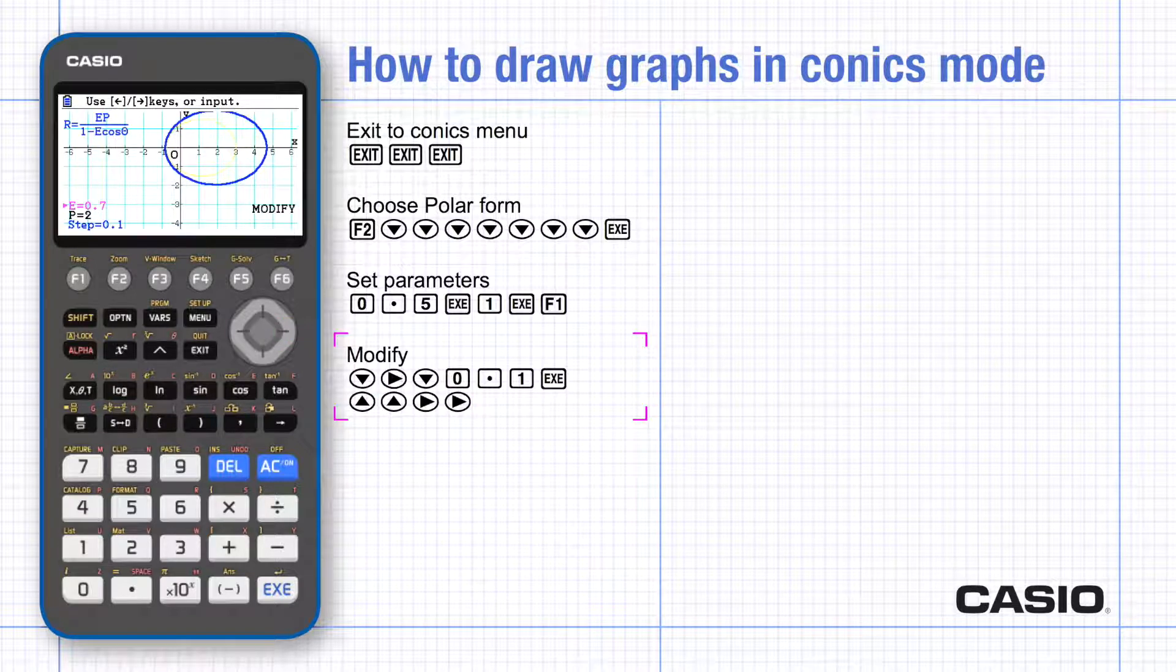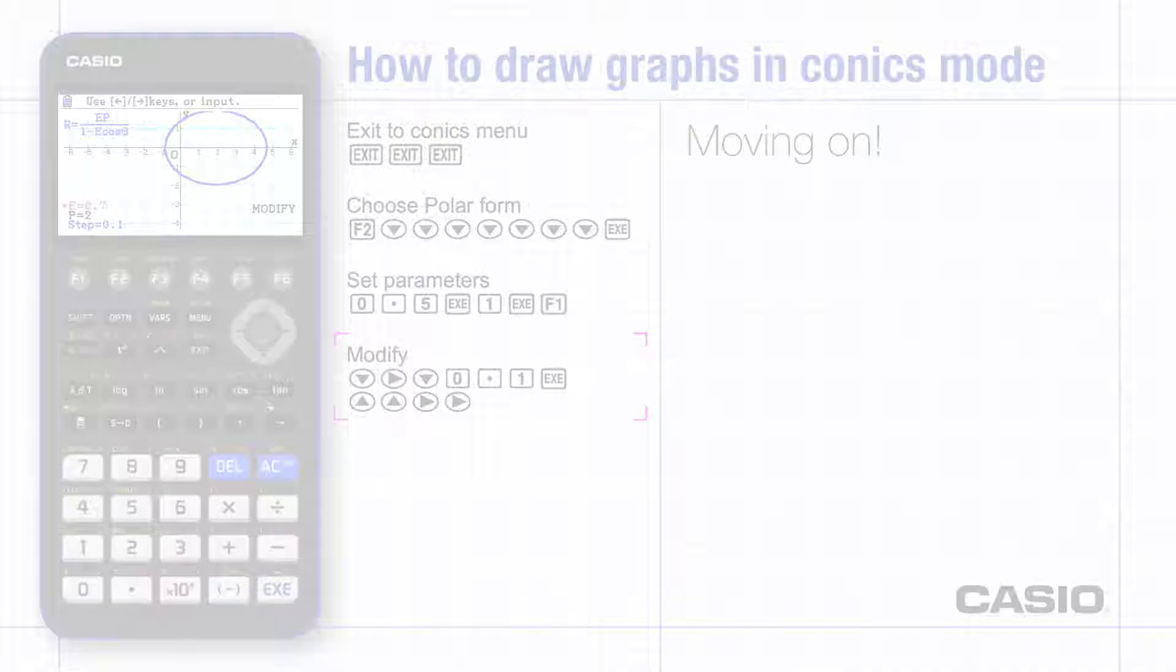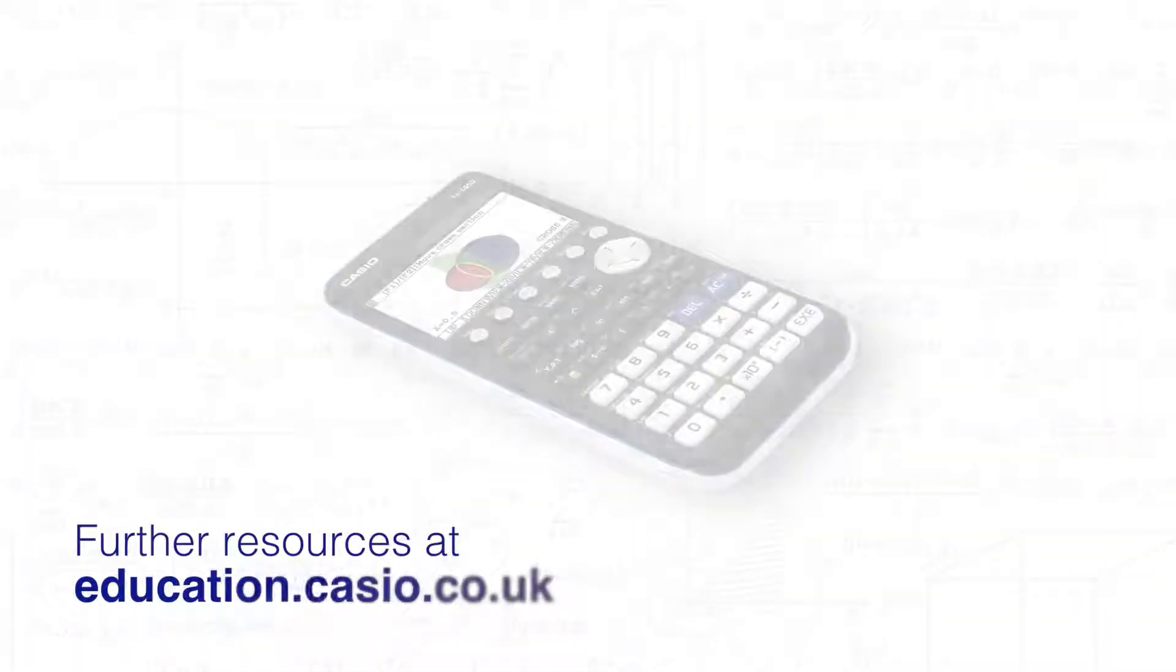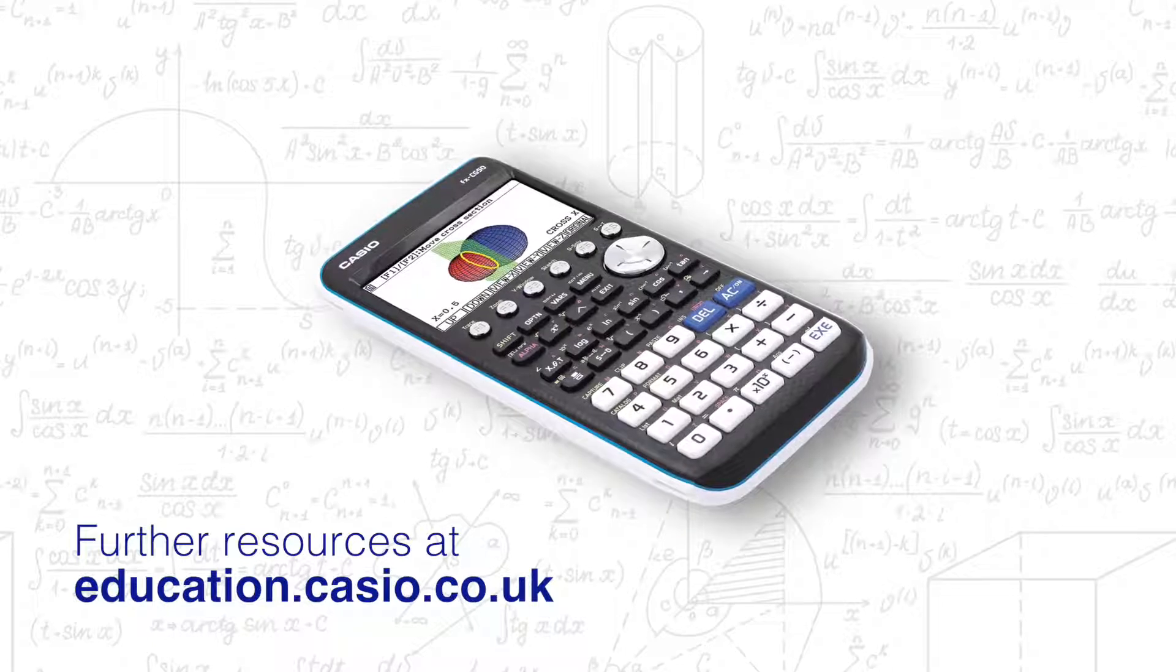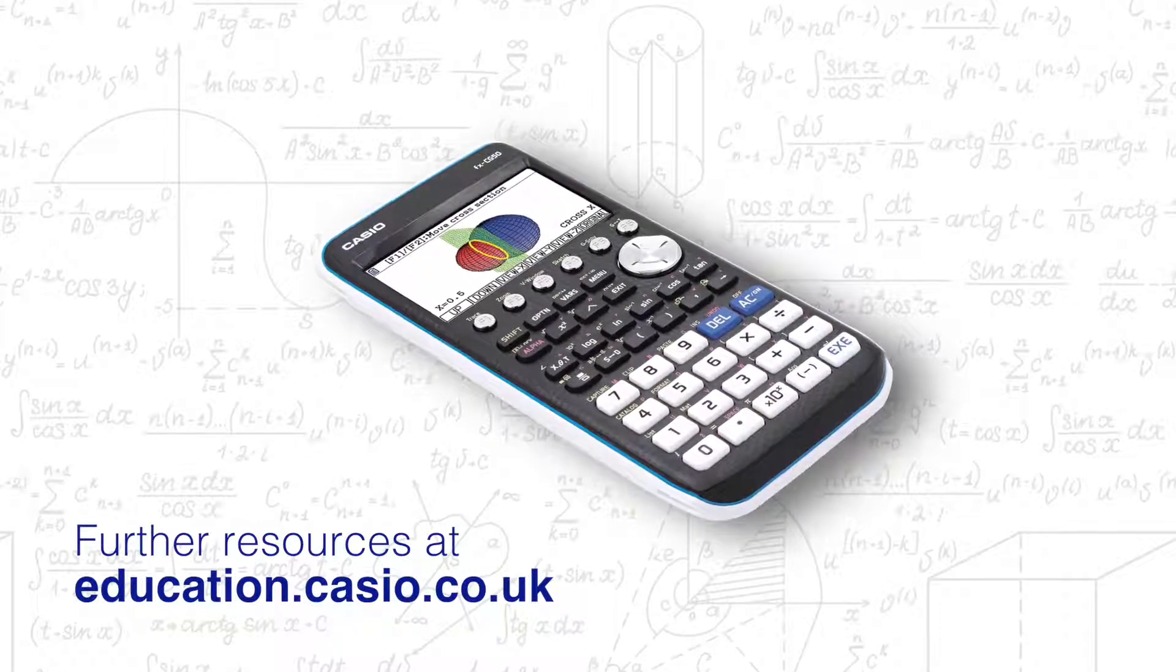Why don't you investigate how the graph changes for different values of e and p? You can find additional resources at education.casio.co.uk.